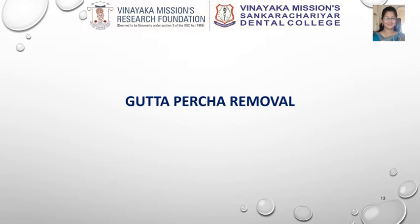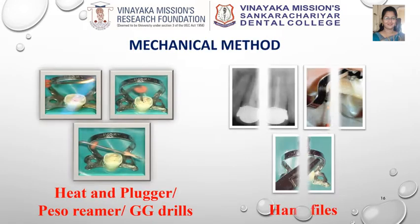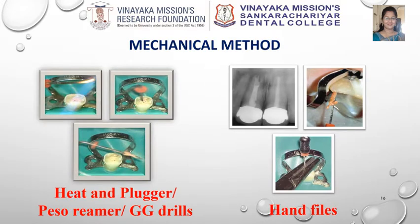In the mechanical method, a plugger can be heated and penetrated over the pink gutta percha mass in the orifice and in the cervical third of the root. It is allowed to cool for 1-2 seconds and the material will adhere to the plugger and come out. Similarly, GG drills or piezo reamer can also be used for removal of gutta percha in the cervical third of the tooth. Secondly, a large number Hedström file can be used to engage the remaining gutta percha and remove it from the canal en masse.